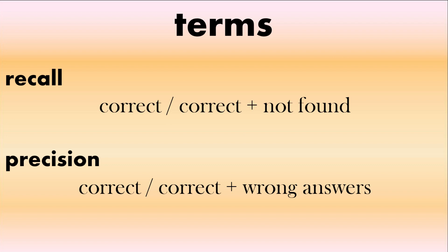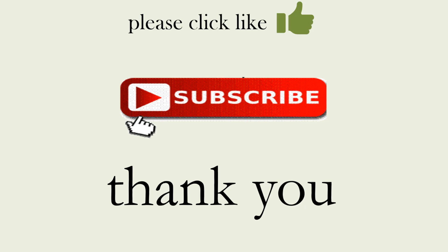Let's look at some terms. Recall is how many are correct divided by the total of correct and not found - we're looking at how many we correctly find out of the ones we were looking to find. Precision is how many we got correct against how many we got correct plus wrong answers - in total how many guesses and how many were correct. That's precision and recall. If you liked this video please click like, and if you haven't already please subscribe. Thank you for watching.